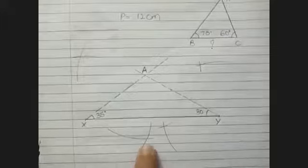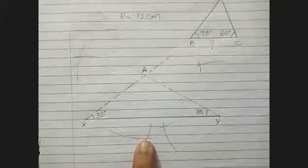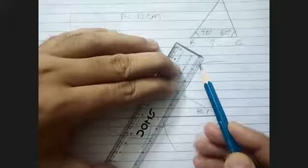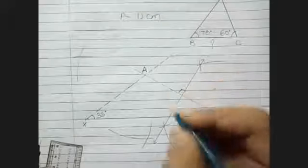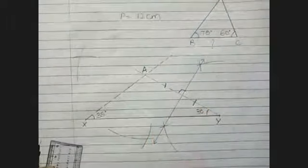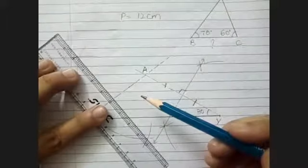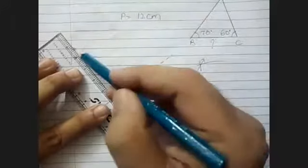After drawing the arcs, the perpendicular bisectors can be drawn. They may or may not meet — that's fine. On each perpendicular bisector, show the 90-degree mark and the equal sides marks.